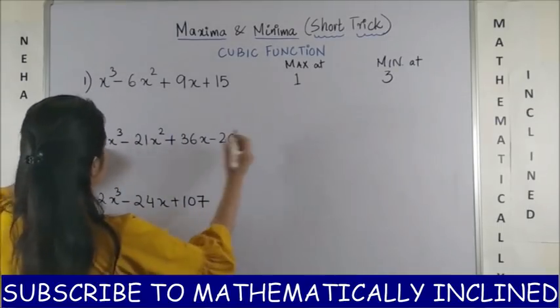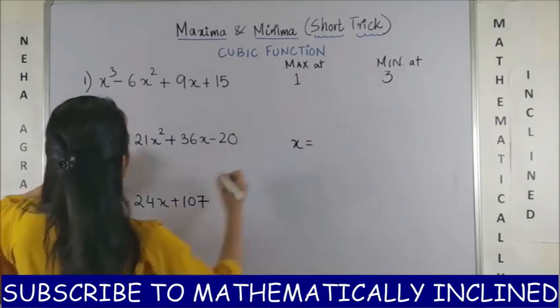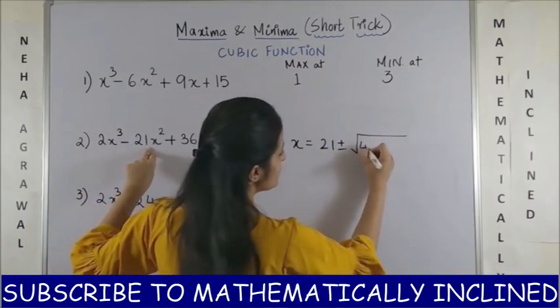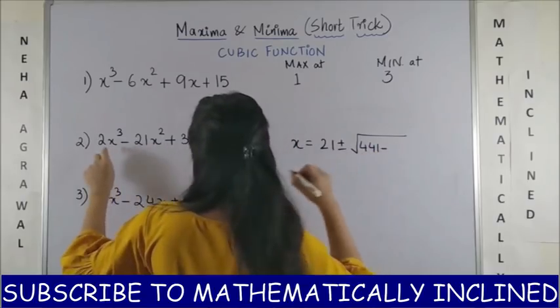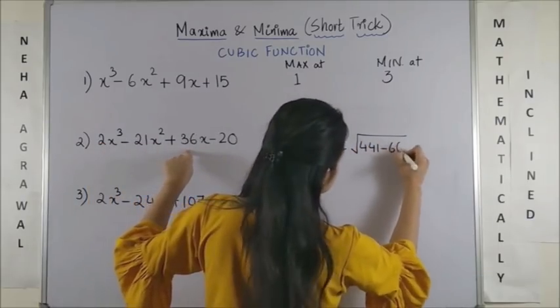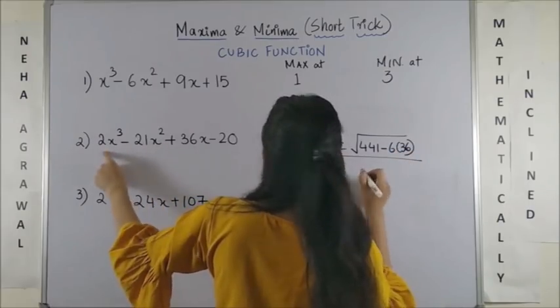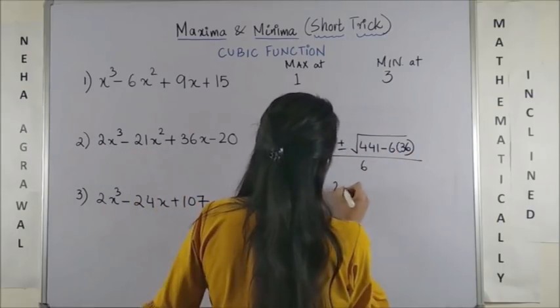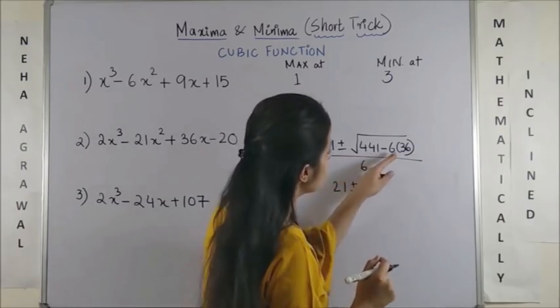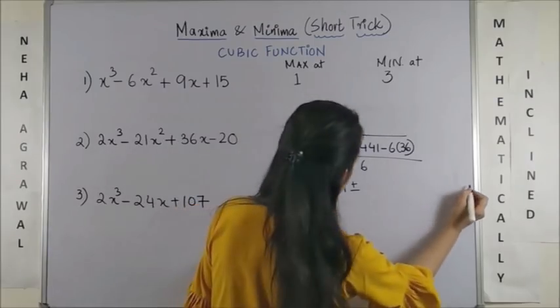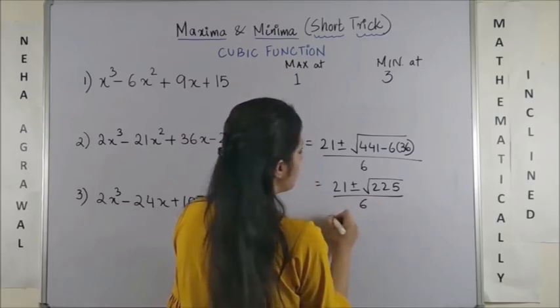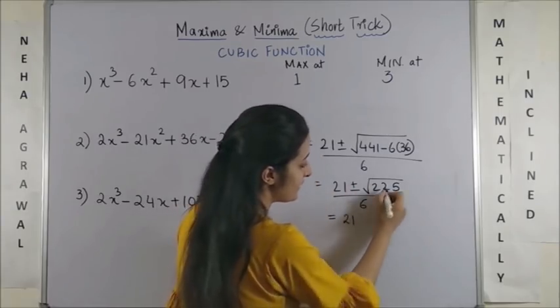Same way going for your second question. Now, here again your x the root would be minus b which is 21 plus minus b square. So, 21 square is 441 minus 3ac. So, 3 into 2 into 36 that's 6 into 36 whole upon 3a that gives you 6. Now, this would give us 441 minus 6 into 36 would end up giving us square root of 225. Now, square root of 225 is a 15.